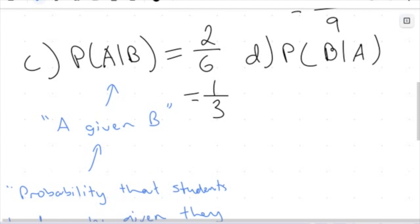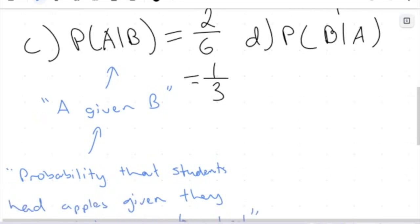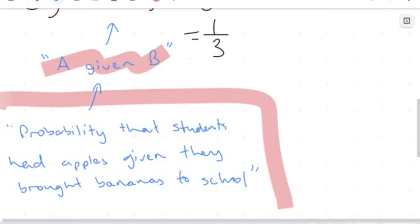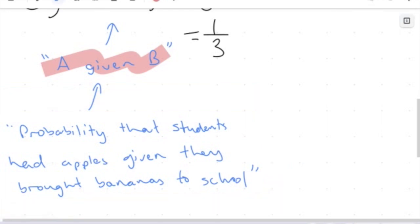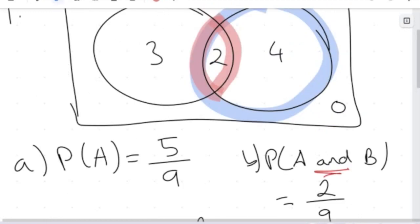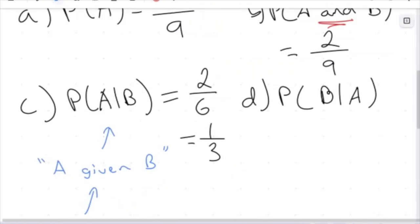The main idea I want to drive home in this video is what all of these sections mean — what my conditional probability means and how I can navigate this with a Venn diagram question.